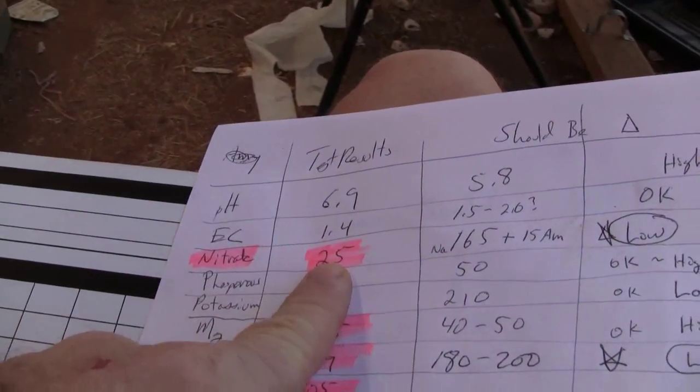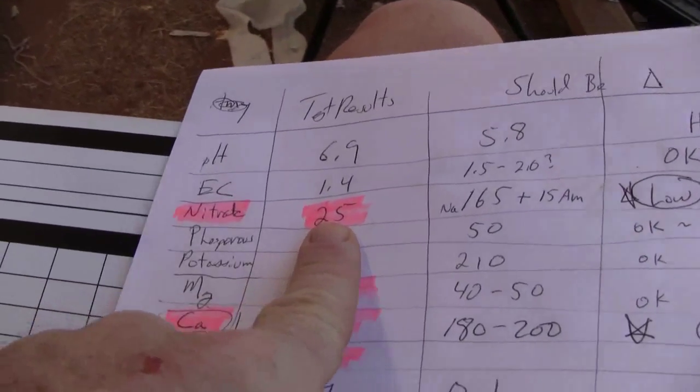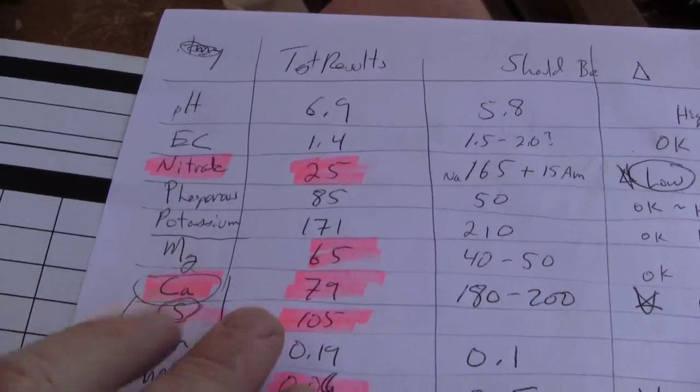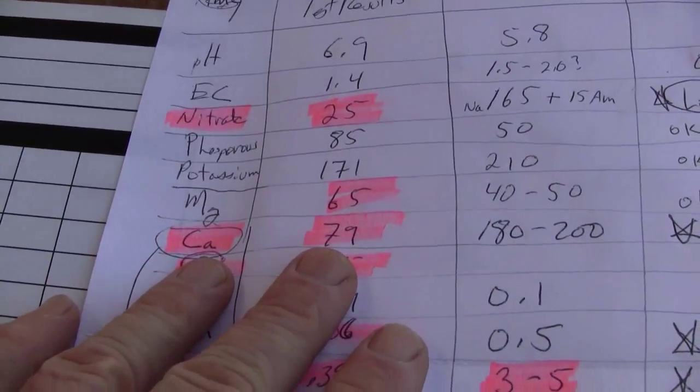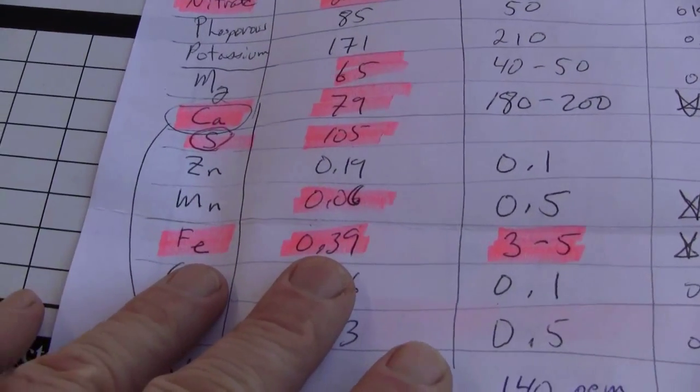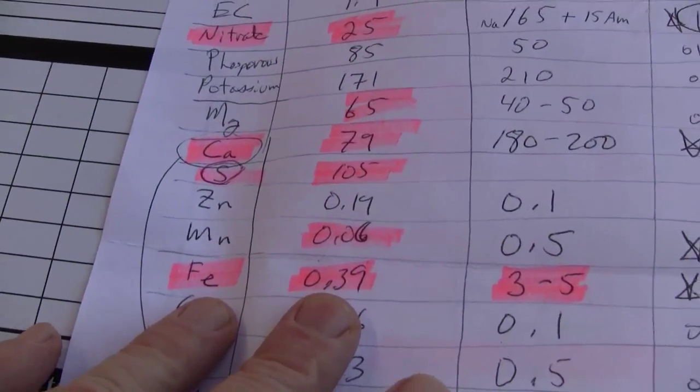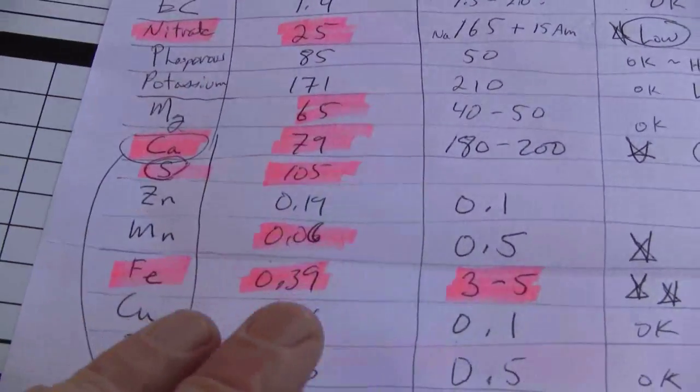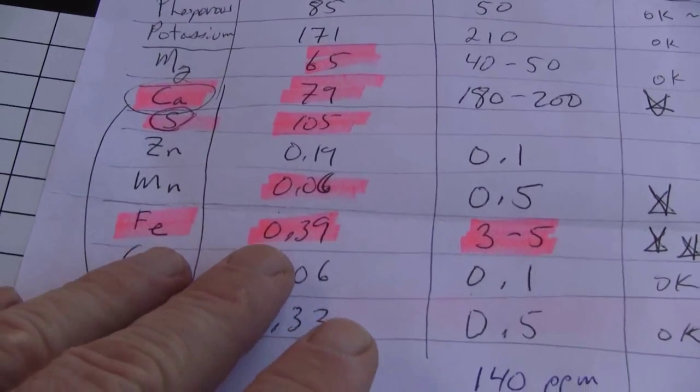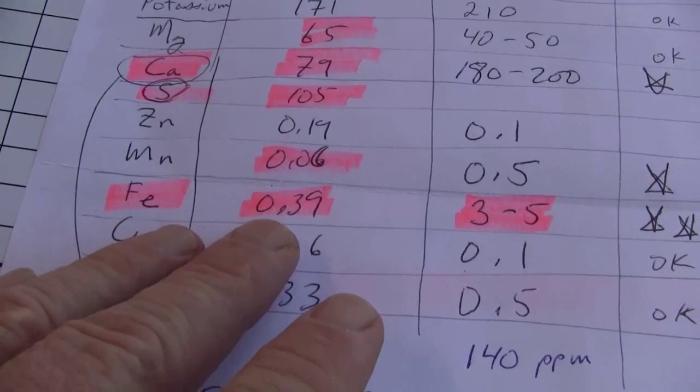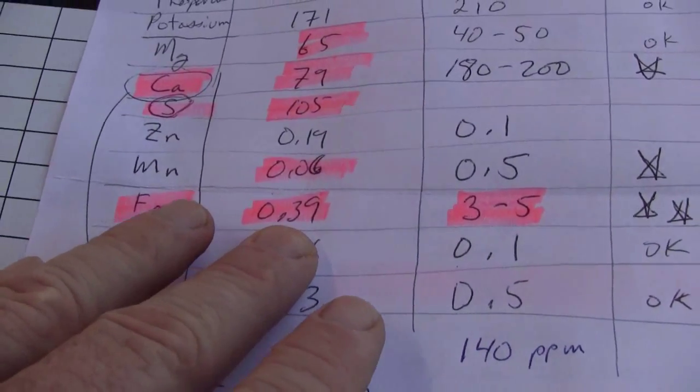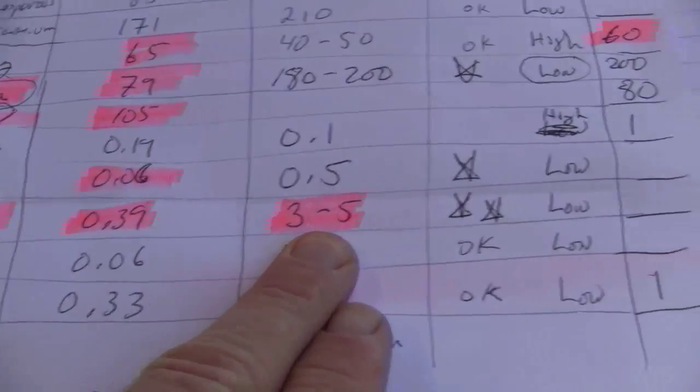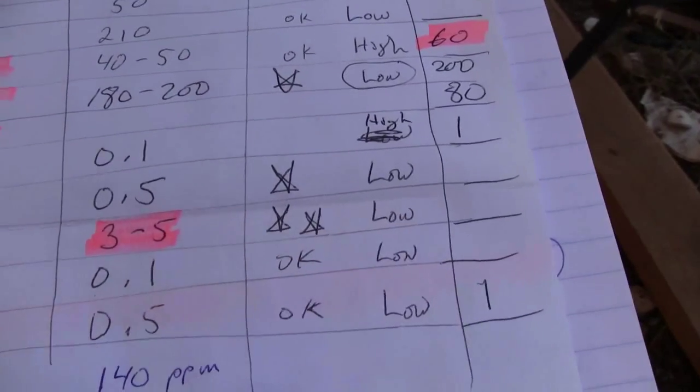The three things that were significantly wrong were the nitrate, that was probably just low at the time. That's not normally low. The calcium and iron. The nitrate and calcium are another thing. Today I want to talk about the iron. It measured 0.39 parts per million when it should be at 3 to 5 parts per million. So I gave that a double star, very low.